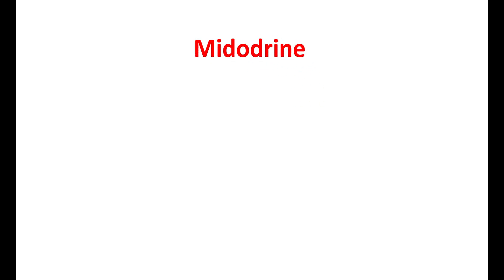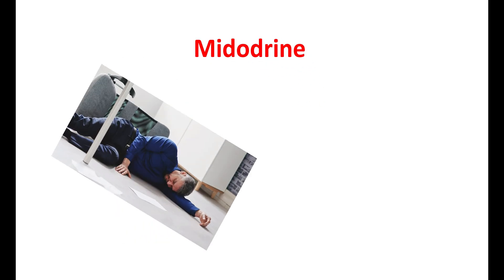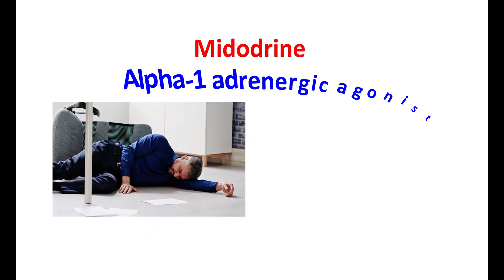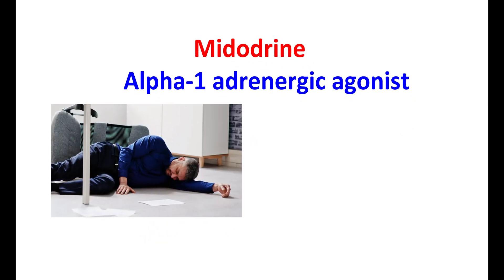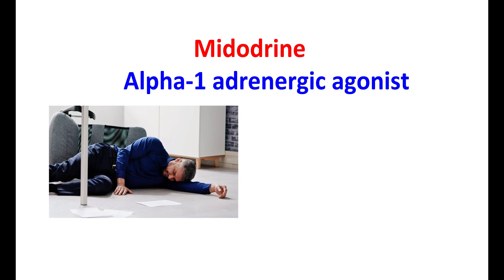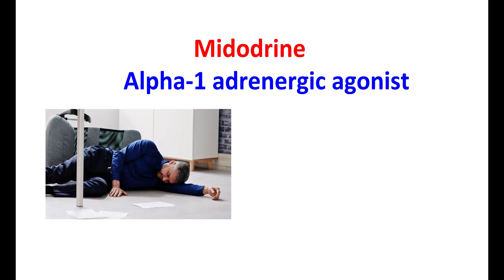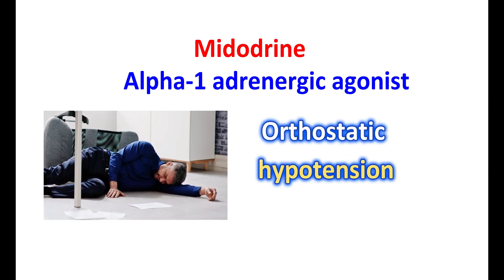Midodrine is a medication used to reduce fainting. It is one of the selective alpha-1 adrenergic agonists, and it can be used for the treatment of orthostatic hypotension.